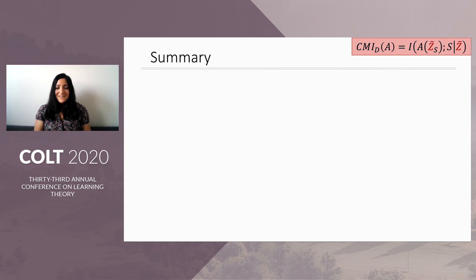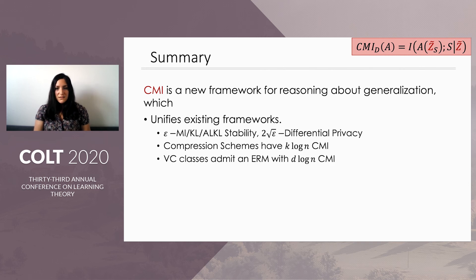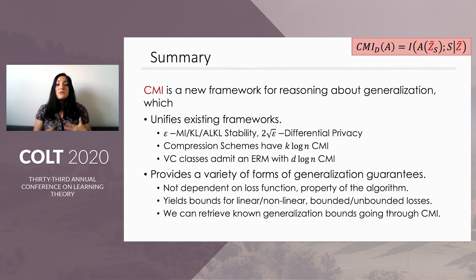So to sum up, CMI is a new framework for reasoning about generalization which unifies existing methods, including compression schemes and uniform convergence and approximate differential privacy. And it also provides a variety of generalization bounds, in part due to the fact that CMI does not depend on a particular loss function. And this allows us to retrieve the known bounds from other conditions going through CMI.